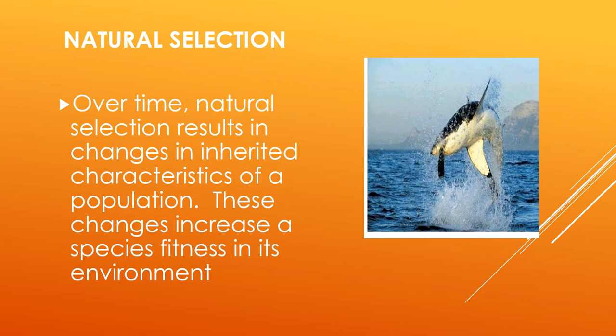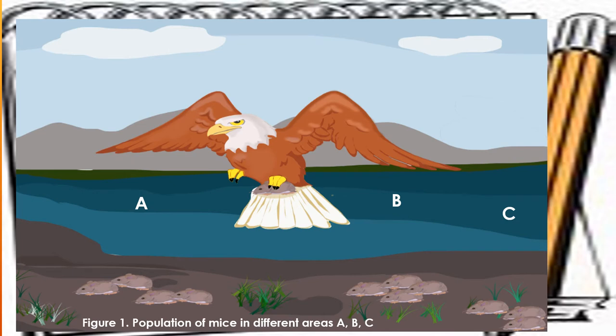Now we will discuss natural selection. Over time, natural selection results in changes in inherited characteristics of a population. These changes increase a species' fitness in its environment. I want you to look at this picture and observe the figure, which shows a population of mice in different areas, labeled A, B, and C.